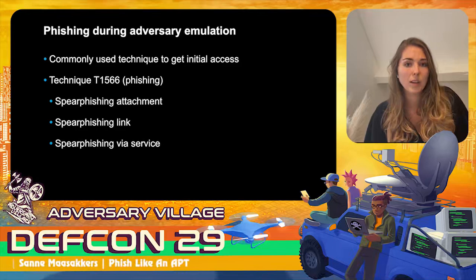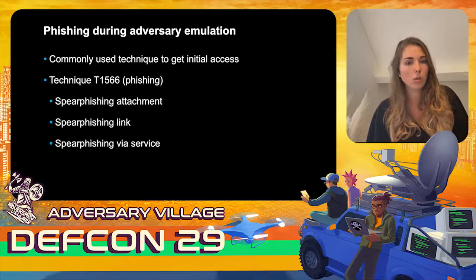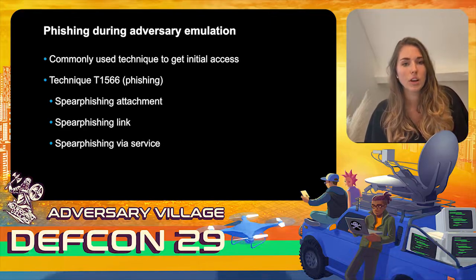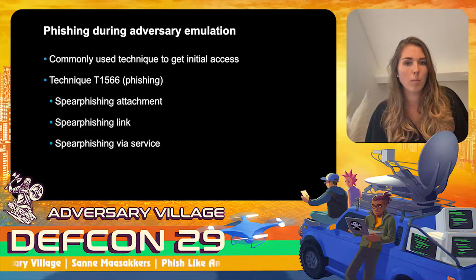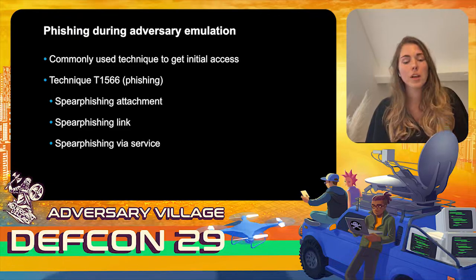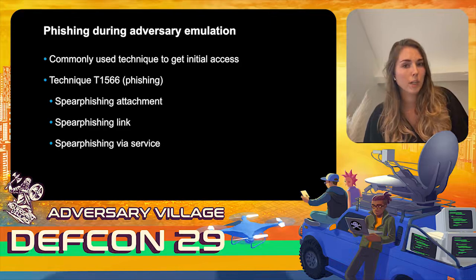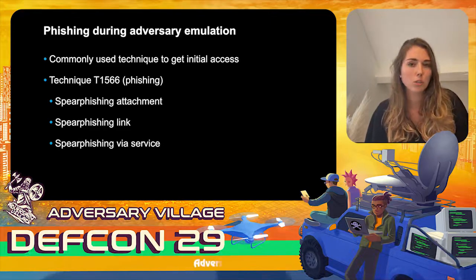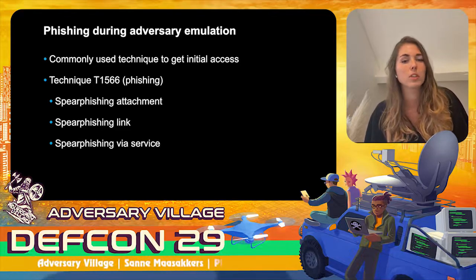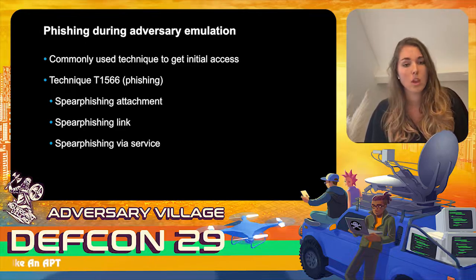The next sub-technique is spear phishing link, where the email includes a link — maybe to a phishing website for credential harvesting, or to a known service like Google Drive or Dropbox hosting a malicious document. The last is spear phishing via service, where attackers use platforms like LinkedIn, Twitter, or Telegram instead of email to deliver the payload.